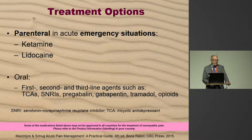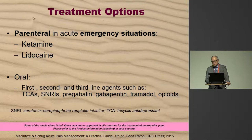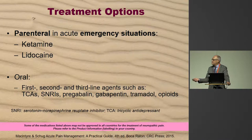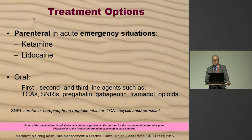If you are in an acute emergency situation — a patient with a brachial plexus avulsion or spinal cord injury — go for immediate parenteral treatment. The two treatment options we will discuss in more detail are ketamine and lidocaine. Orally, you have first, second, and third line treatment options.